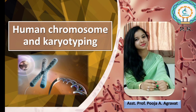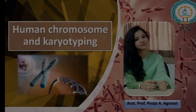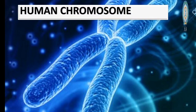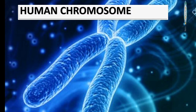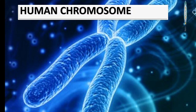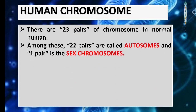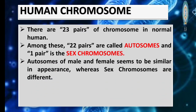In today's session we are going to learn about human chromosomes and karyotyping. Chromosomes, as you already know, are thread-like structures of nucleic acids and protein found in the nucleus of most living cells. Chromosomes carry genetic information in the form of genes. There are 23 pairs of chromosomes in a normal human being, among which 22 are called autosomes and one pair is sex chromosomes.